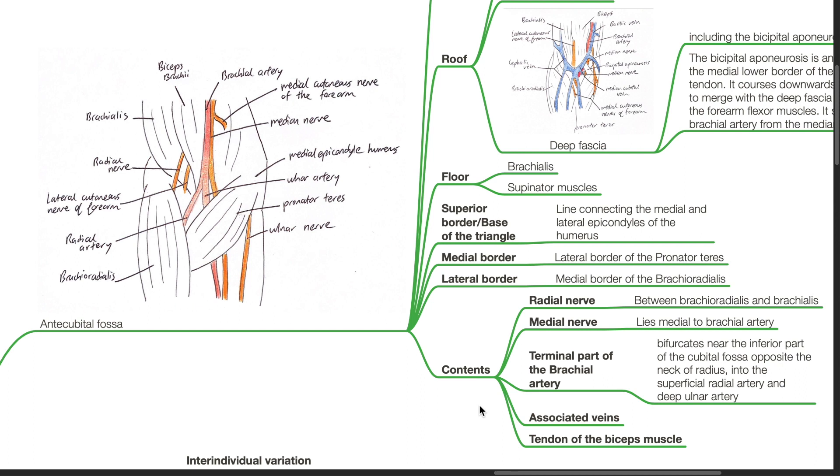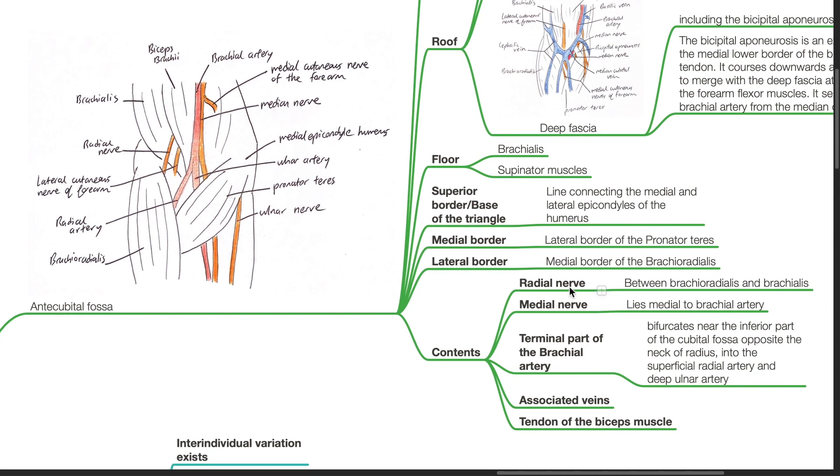Contents of the anticubital fossa include the radial nerve, which lies between the brachioradialis and the brachialis; the median nerve, which lies medial to the brachial artery; the terminal part of the brachial artery. The brachial artery bifurcates near the inferior part of the cubital fossa opposite the neck of the radius into the superficial radial artery and deep ulnar artery; the associated veins; and the tendon of the biceps muscle.